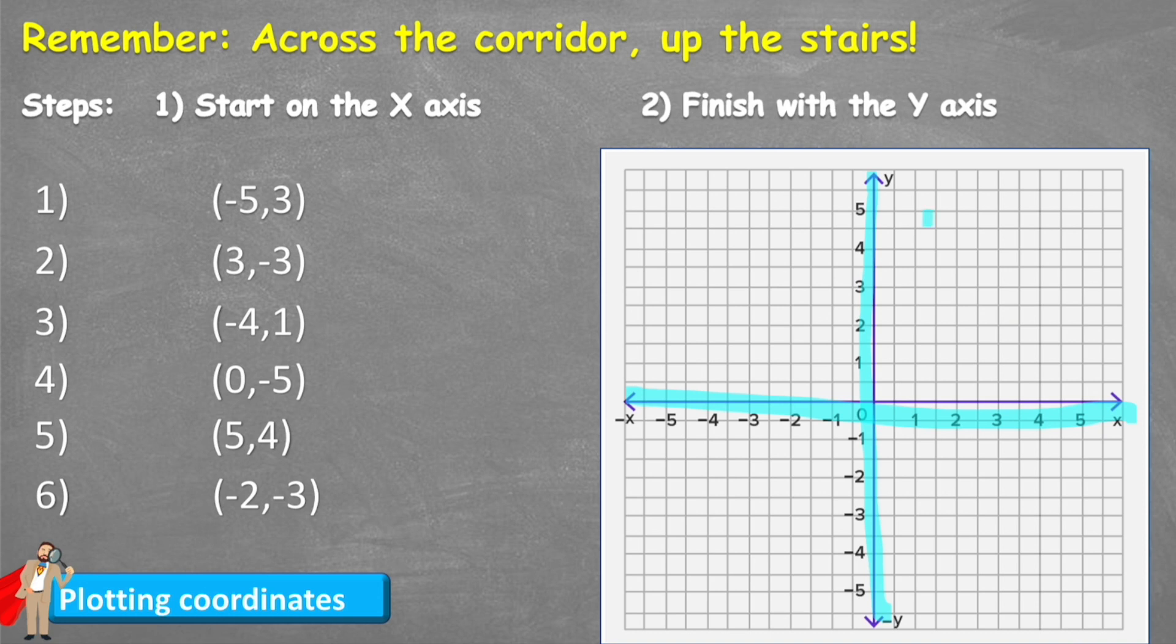We have the first quadrant which is this one here, and a lot of the time we can just use this quadrant because this is the positive quadrant with positive numbers on both axes. And then sometimes we use the other three, which we're going to look at as well today.